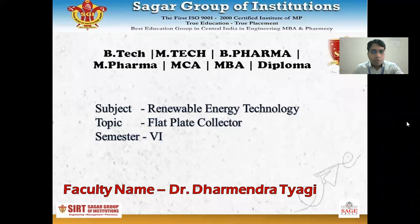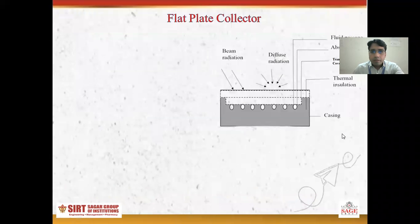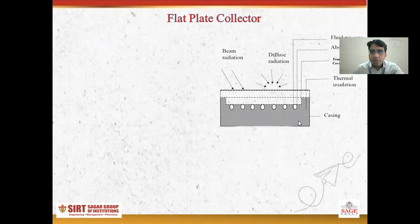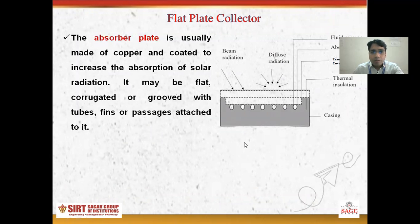Hello, dear students. Today we are going to discuss the flat plate collector. This is the schematic diagram of the flat plate collector, which consists of the casing, thermal insulation, transparent cover, absorber plate, and the fluid passage. We will now discuss all the components of this flat plate collector one by one.